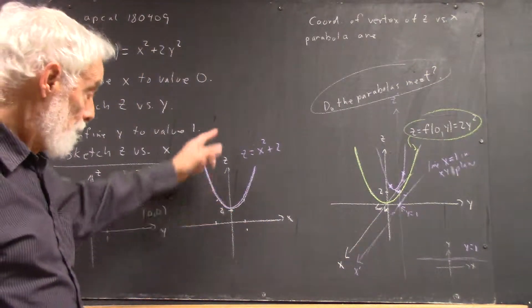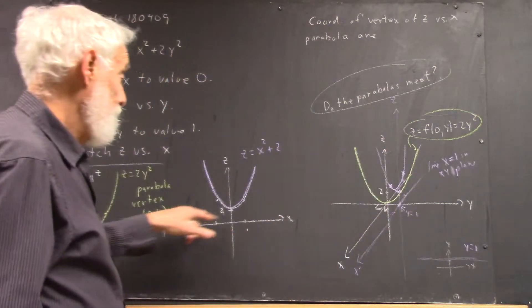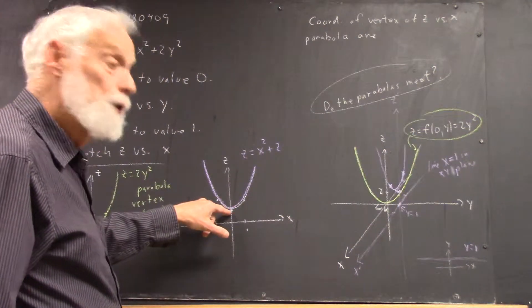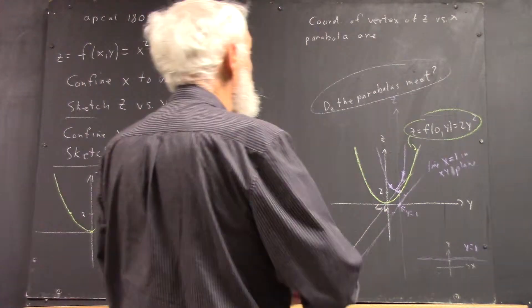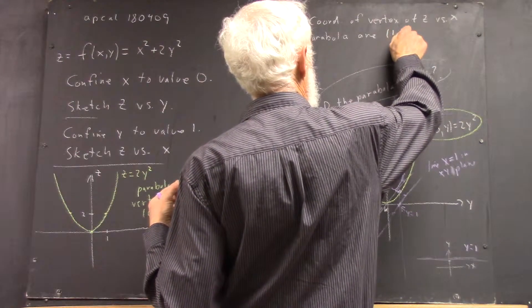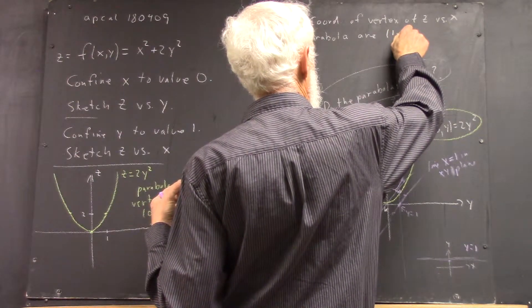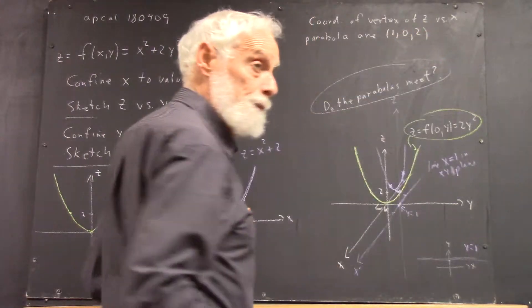Right here is the vertex just above this x-prime axis here. It's two units above, right? So the coordinates of that vertex are x is one, y is zero, and z is two.